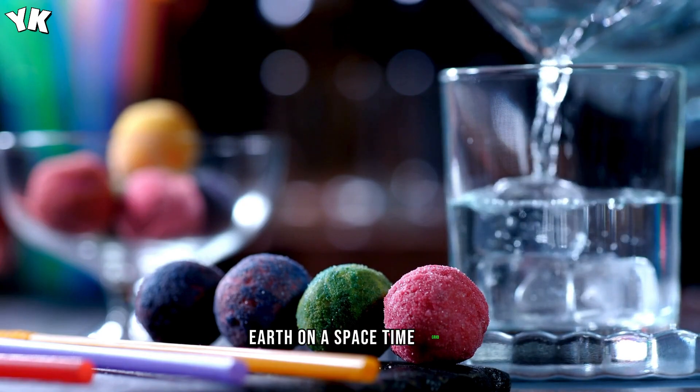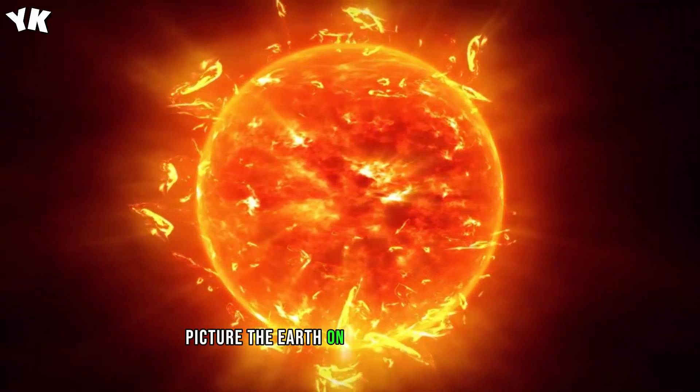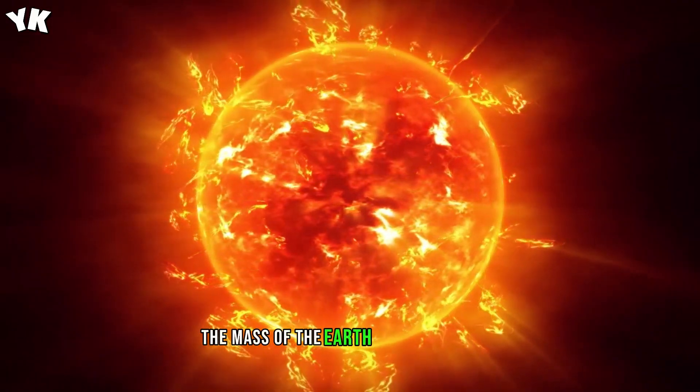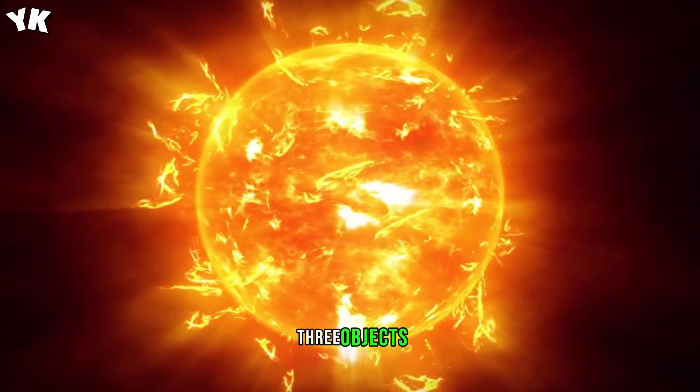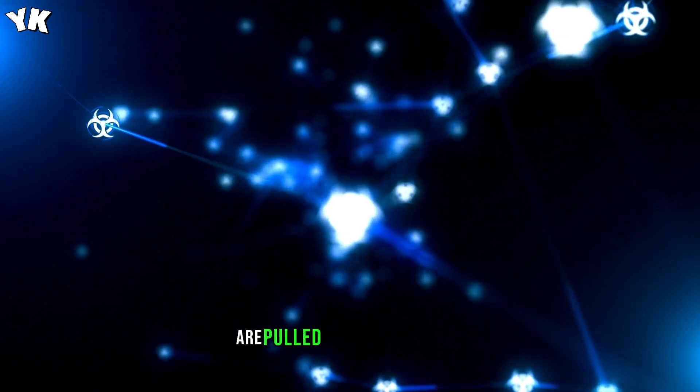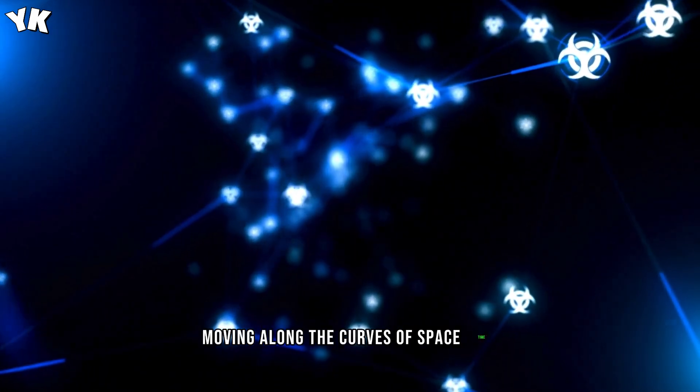Picture the Earth on a grid of spacetime. The mass of the Earth warps spacetime, creating a gravity well. Objects, including us and the moon, are pulled towards this well, moving along the curves of spacetime.